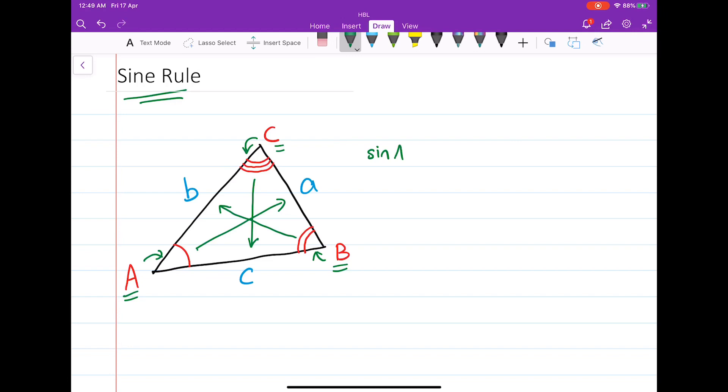of angle A over the length a equals sine of angle B over the length b, and also equals sine of angle C over the length c.